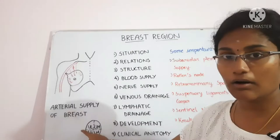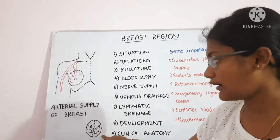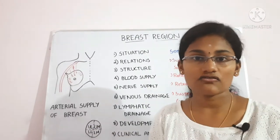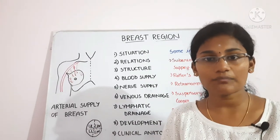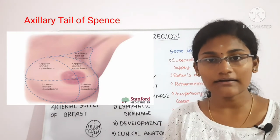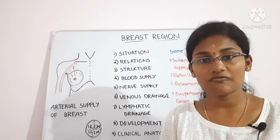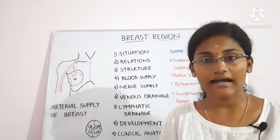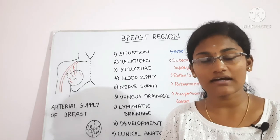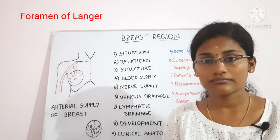The four quadrants are the upper lateral, upper medial, lower lateral, and lower medial quadrants. The upper lateral quadrant gives rise to the axillary tail of Spence, which pierces the deep fascia and enters the axilla through a foramen called the foramen of Langer.